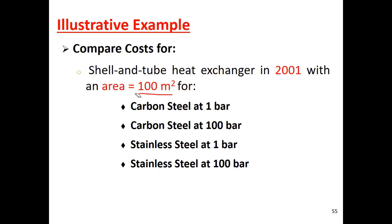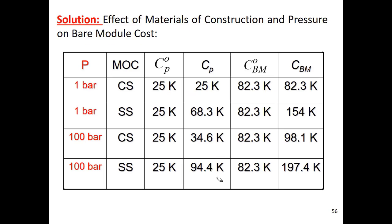Consider a heat exchanger with an area of 100 square meters and compare different scenarios: carbon steel at 1 bar, carbon steel at 100 bar, and stainless steel at 100 bar. This is similar to what we already calculated — it just shows the difference in cost due to changes in material and pressure.